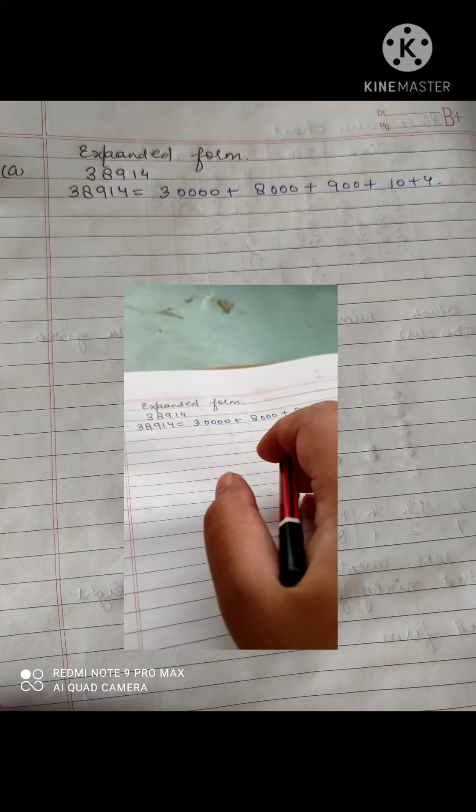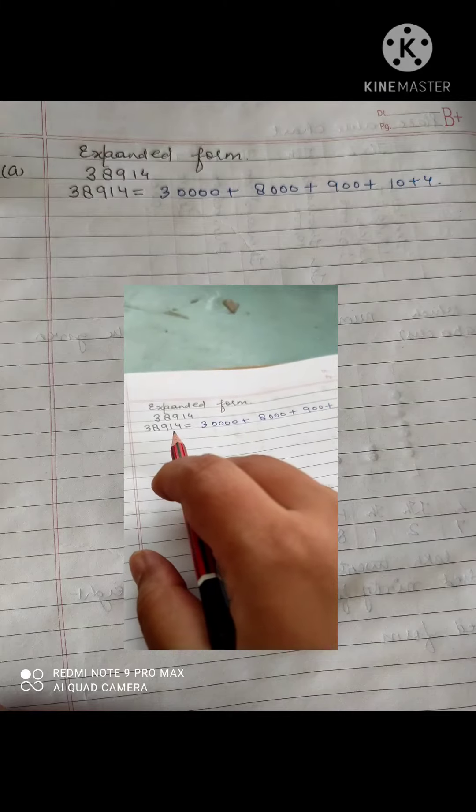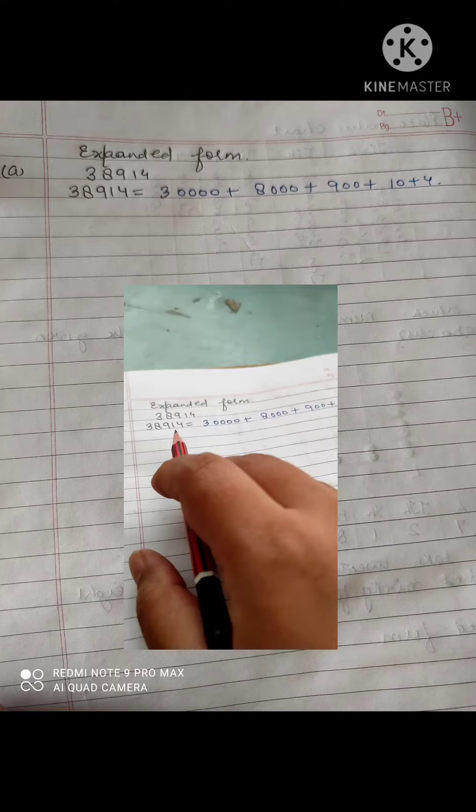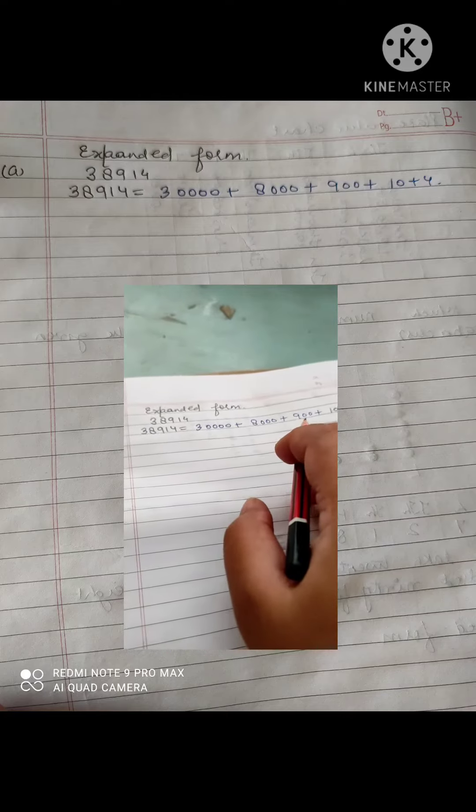After that you will put plus and you will write 9. And after that you will count the digit: 1, 2. And you will put 2 zeros.